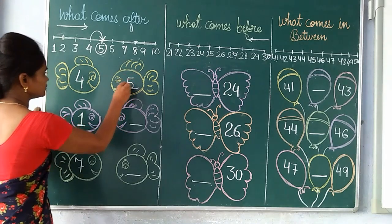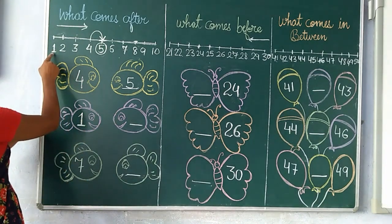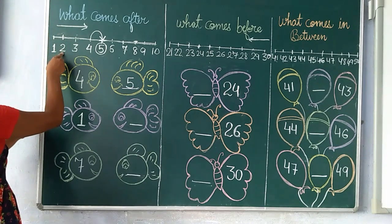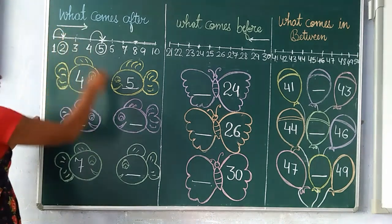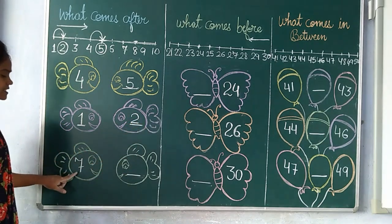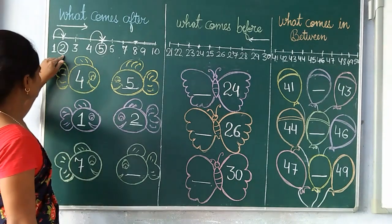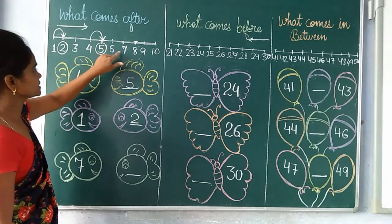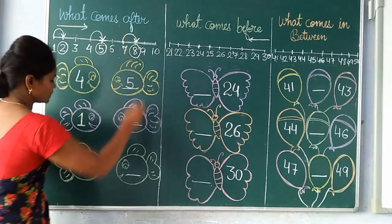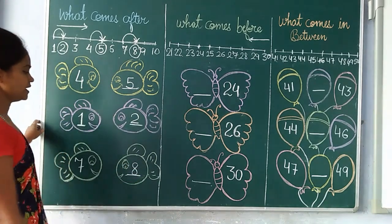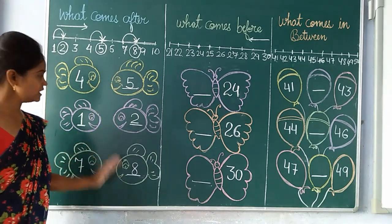Next number is 1. What comes after 1? It comes 2. We will count the number: 1, 2. What comes after 1? It comes 2. Next, what comes after 7? We count: 1, 2, 3, 4, 5, 6, 7. What comes after 7? It comes 8. My dear students, the number that comes after is always greater than the given number.